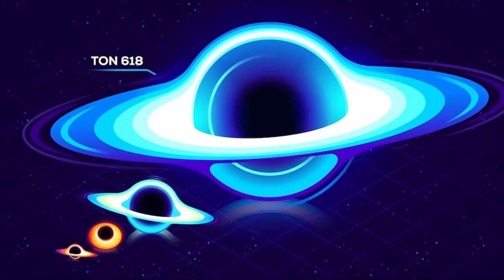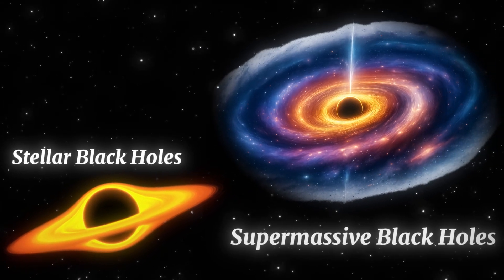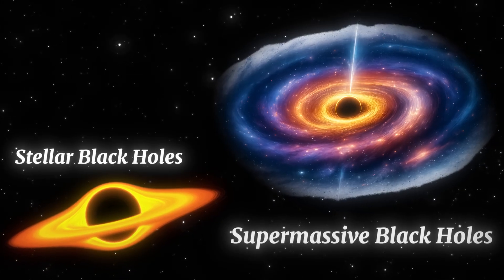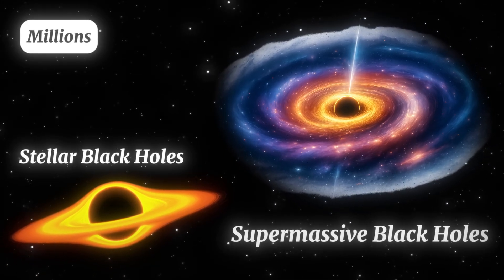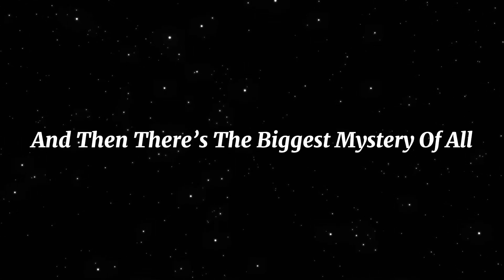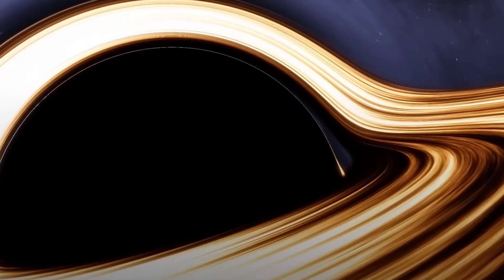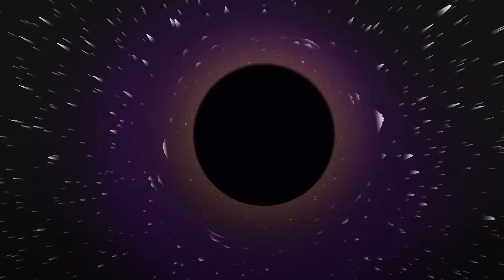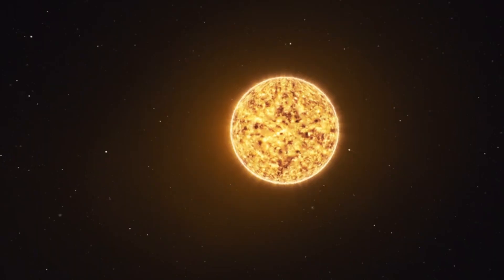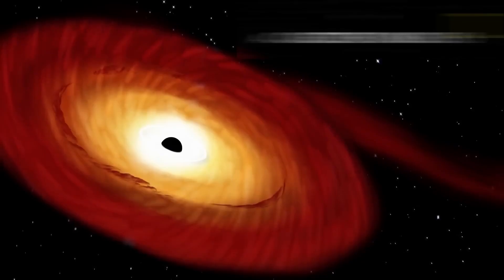But not all black holes are created equal. Some are tiny, the remains of single stars. Others, called supermassive black holes, sit at the centers of galaxies and weigh millions, even billions of suns. And then, there's the biggest mystery of all. Primordial black holes. Ancient, hypothetical black holes that might have formed just after the Big Bang. So, if stars gave birth to black holes, what do black holes do with their lives?